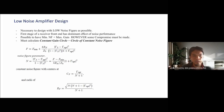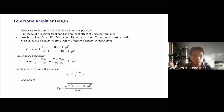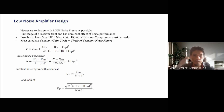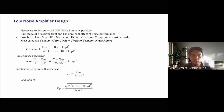We want to design an amplifier with low noise and high gain. So we need to compromise between minimum noise figure and maximum gain. In order to do that, we calculate both the traditional constant gain circle and the circle of constant noise figure.